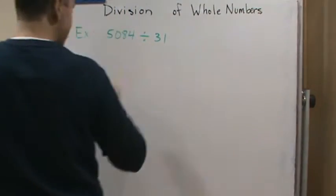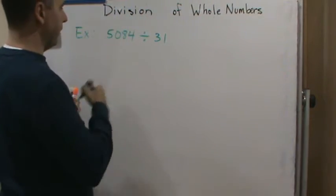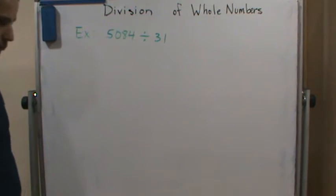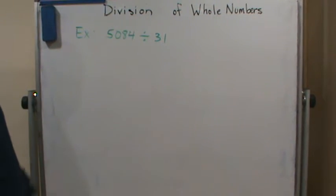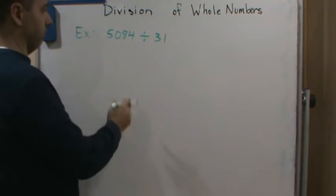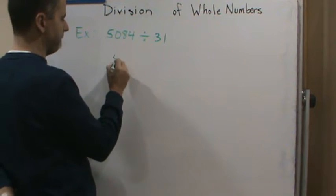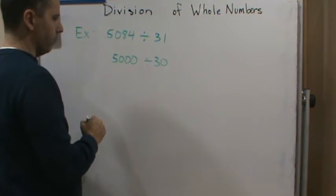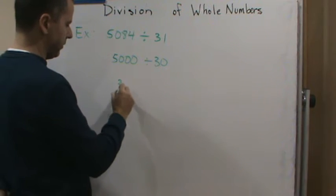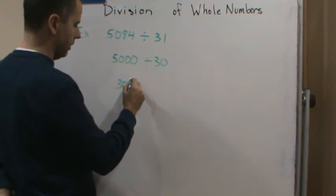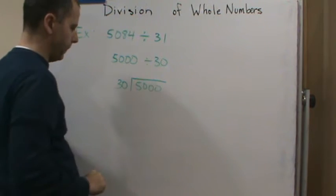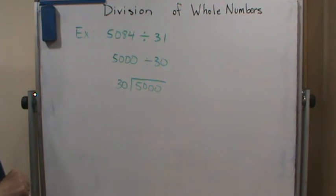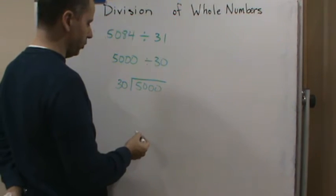So for example, in this case, if you estimate this, what would you estimate this by? Well, in this case here, you can estimate 5,000 divided by 30. So if you take 5,000 divided by 30, well that should be, let's see, 30, right? So this should be close to what?